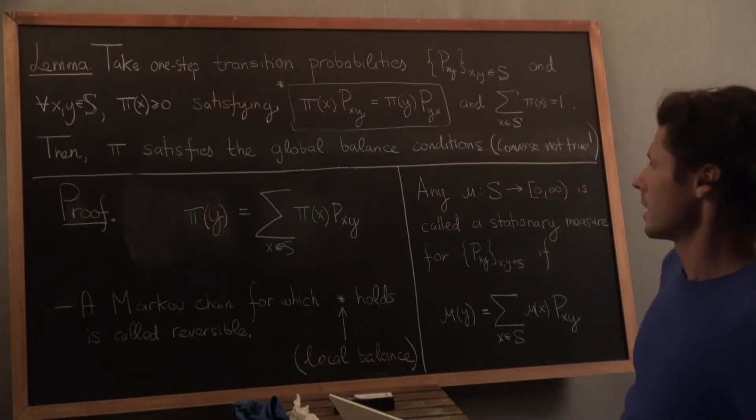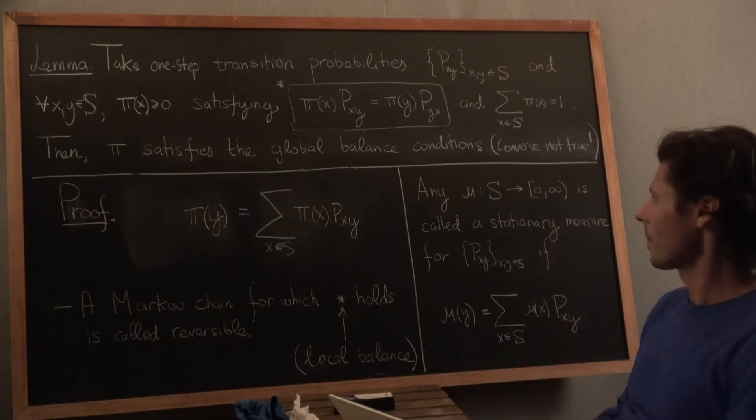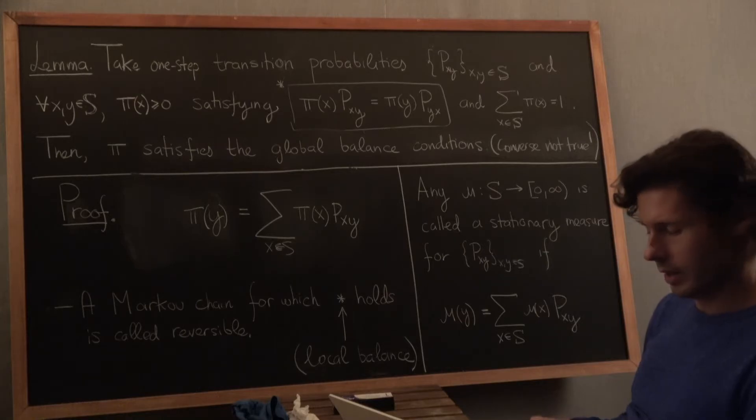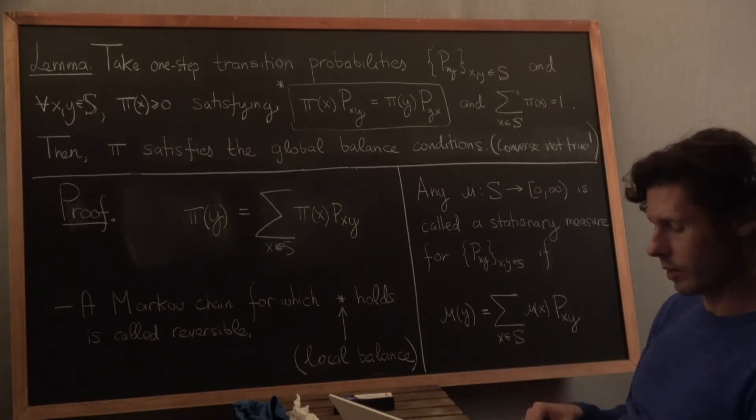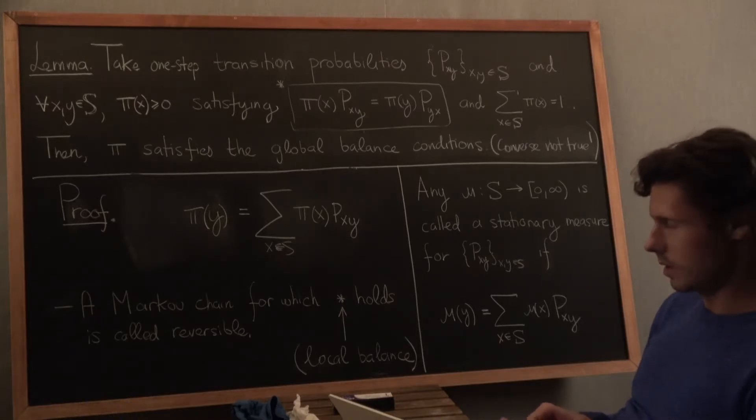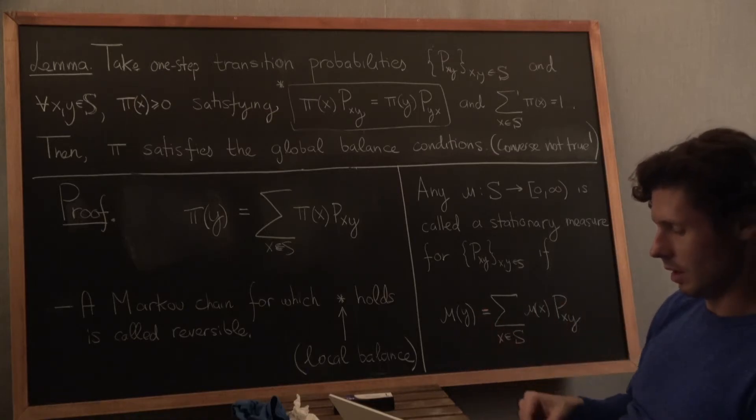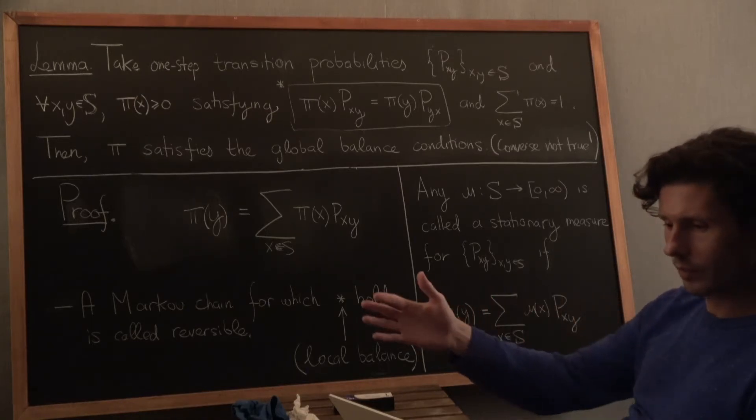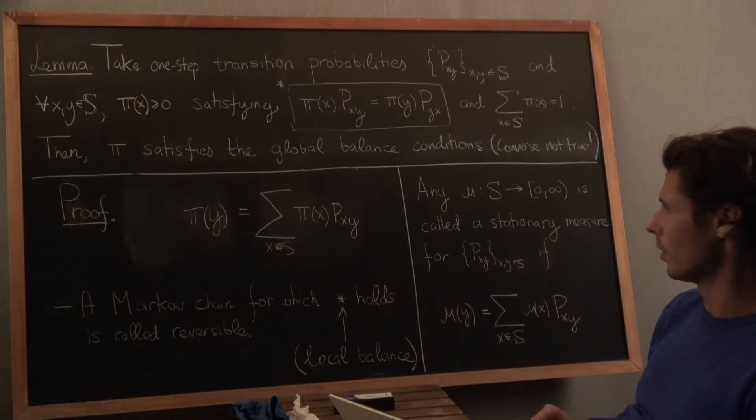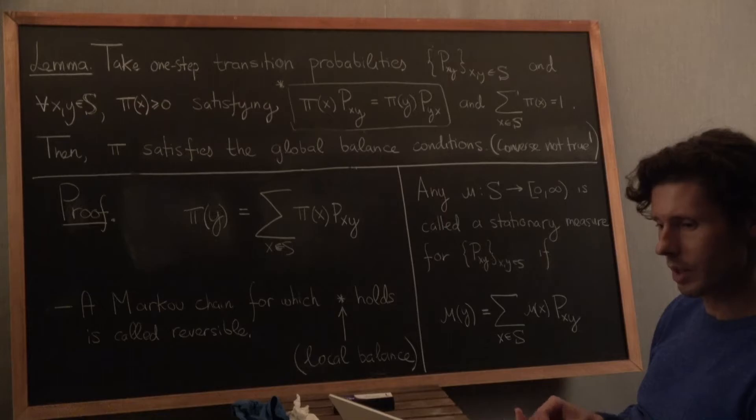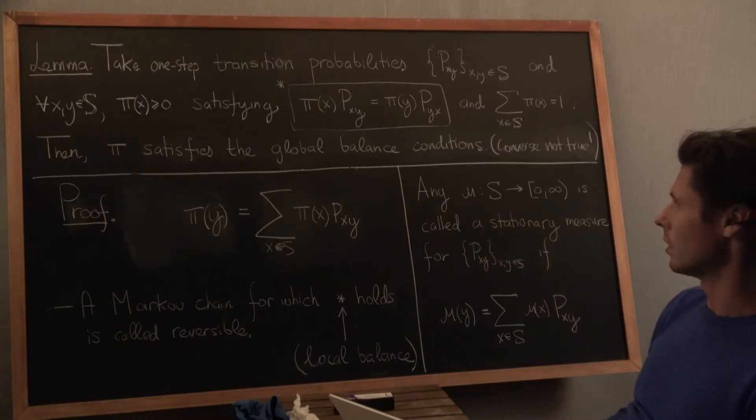So we'll see examples where the converse doesn't hold. There's a nice analogy with these chains where the idea of a reversible chain is that when you watch it moving forwards or backwards in time, you can't tell the difference. Whereas with chains that are not reversible, they may satisfy global balance, but they don't satisfy local balance. You can see them evolve one way in time or the other way in time and know exactly if time is going forward or backwards based on what you're observing.